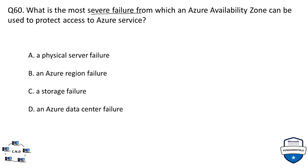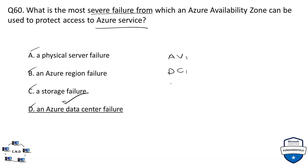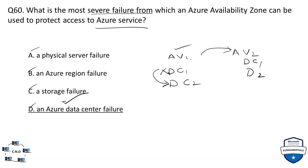Question 60: what is the most severe failure from which an Azure Availability Zone can be used to protect access to Azure services? Options: A) physical server failure, B) Azure region failure, C) storage failure, D) Azure data center failure. The correct answer is data center failure. Inside each availability zone we have multiple data centers. If one data center fails, the availability zone protects us using a secondary data center. Resources replicated across multiple availability zones can also be accessed from a secondary availability zone.